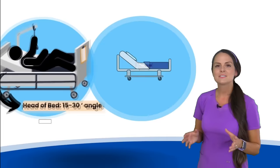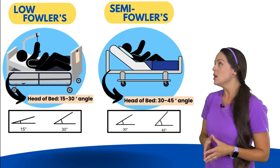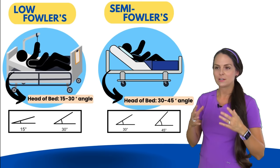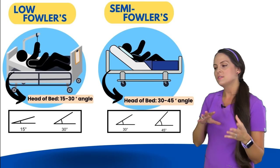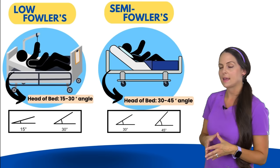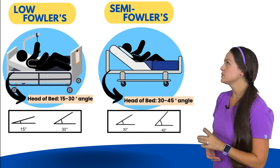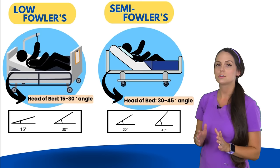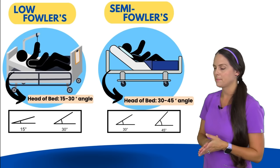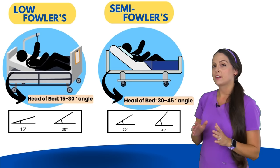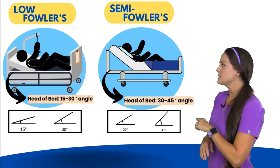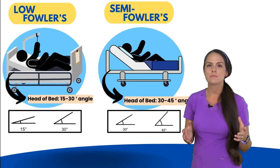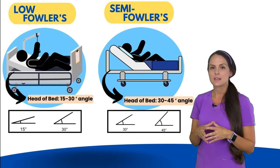Now let's talk about the Fowler's positions — there are about four of them, and the name comes from a surgeon. These positions are all about the angle of the head of the bed, so pay attention to those angles because that's where you'll be tested. The patient is lying on their back with knees flexed or extended. Low Fowler's has the head of the bed at about 15 to 30 degrees — almost supine with a slight elevation. Semi Fowler's is higher, with the head of the bed at 30 to 45 degrees. Note that some sources group low Fowler's and semi Fowler's together and simply call it semi Fowler's at up to 30 degrees.